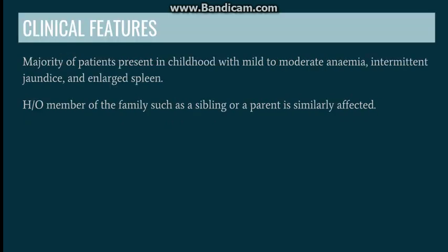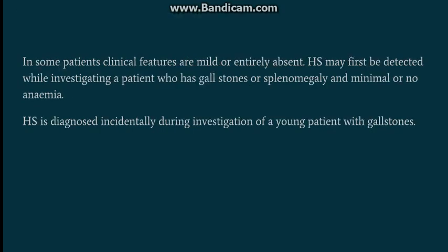The clinical features are those of hemolytic anemia. The majority of patients present in childhood with mild to moderate anemia, intermittent jaundice, and an enlarged spleen. A family history of involvement is mostly seen. However, some patients have very mild symptoms, and an incidental diagnosis can also be made — especially when investigating a patient for gallstones (pigment type, seen in hemolytic anemia), splenomegaly, or minimal anemia. Clinical features can vary from patient to patient.